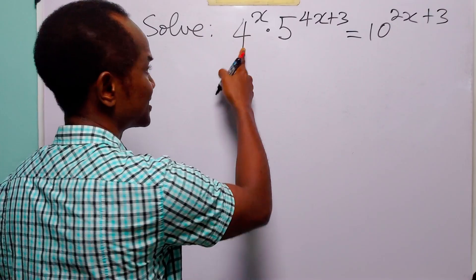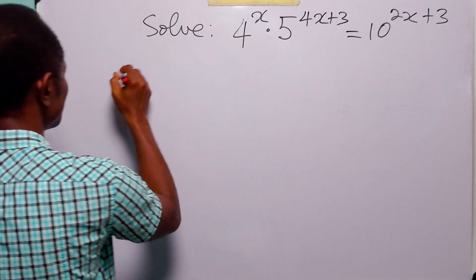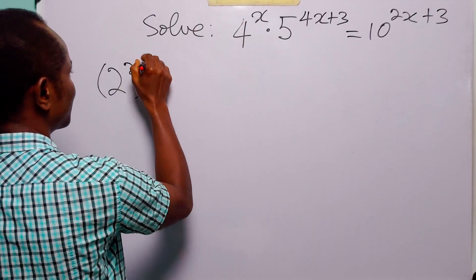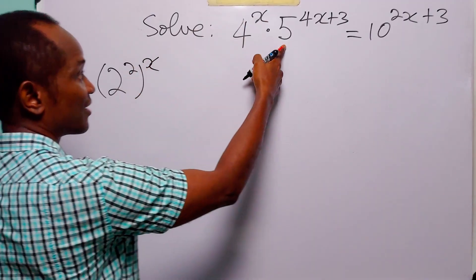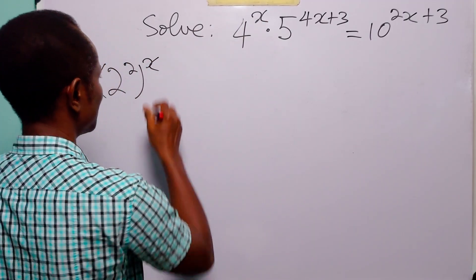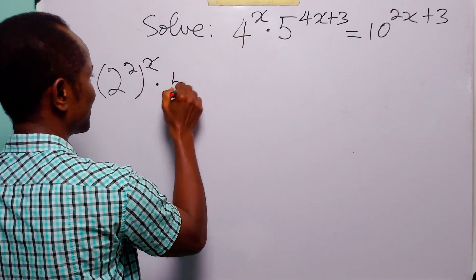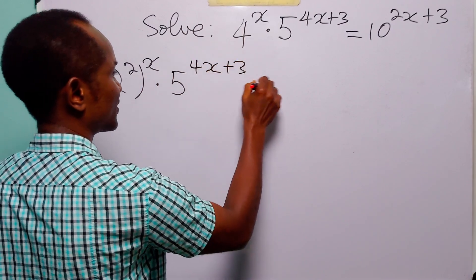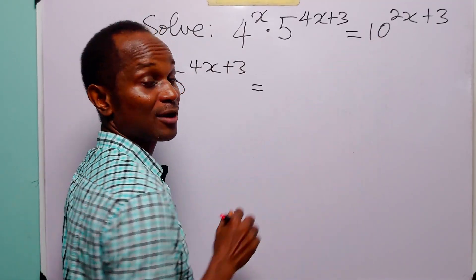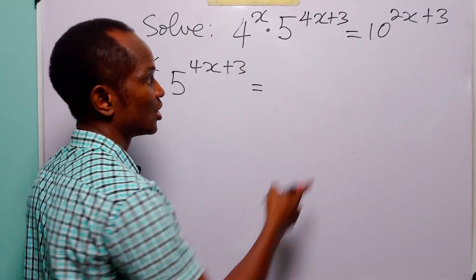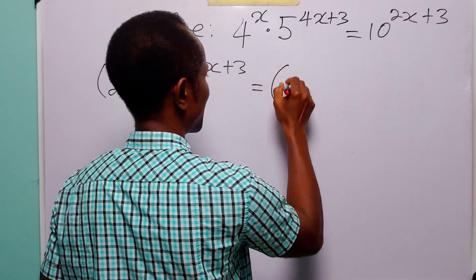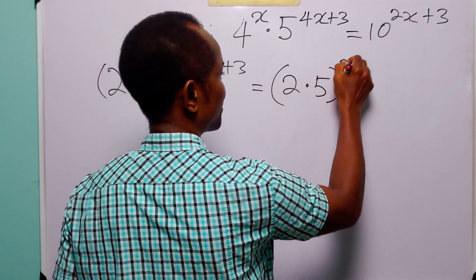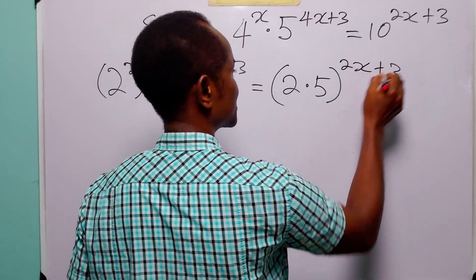We know that 4 is equal to 2 squared, so this is going to be 2 squared to the power x. 5 already is a prime number, so we have multiplied by 5 to the power 4x plus 3. And then we know that 10 is equal to 5 times 2, so on the right hand side we have 2 times 5 to the power 2x plus 3.